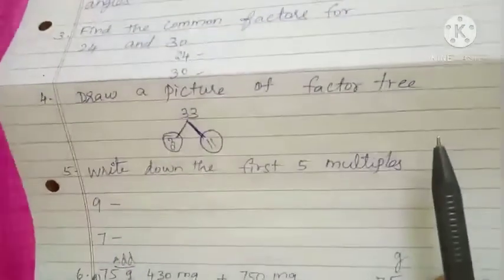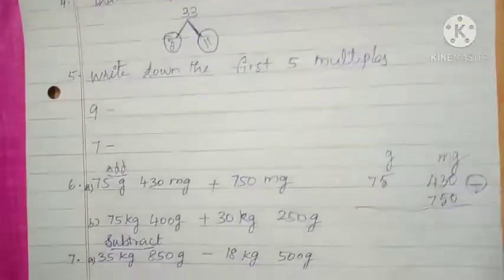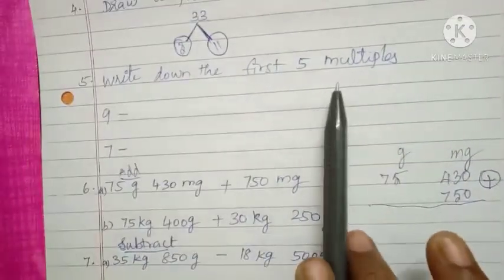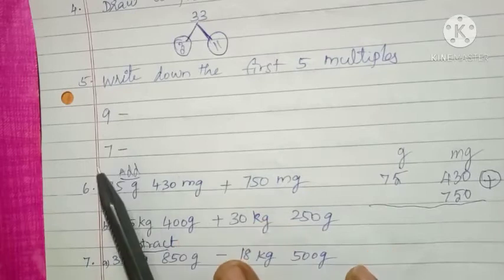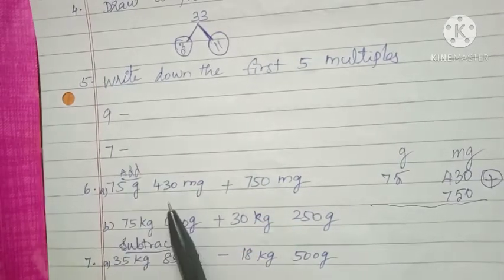Then fifth one, write down the first 5 multiples. You know the 9 table and 7 table, write for first 5 numbers.